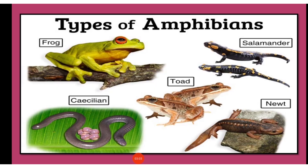Organisms which live in both aquatic as well as land or terrestrial habitats are known as amphibians. Examples are frogs, toads and salamanders.